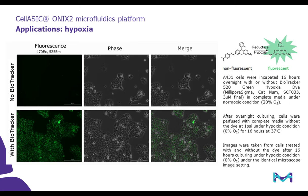Next, we would like to show you the live cell movie generated using the Biotracker hypoxia live cell dye. This is a cell-permeable live cell dye which becomes fluorescent under hypoxic conditions inside of cells. Here we are looking at A549 cells loaded with and without dye after 16 hours incubation under hypoxic condition to show its specificity. Let's take a look at the live cell movie.